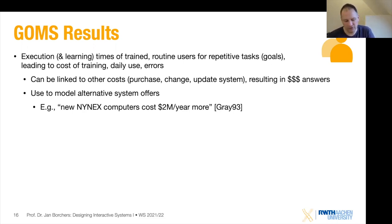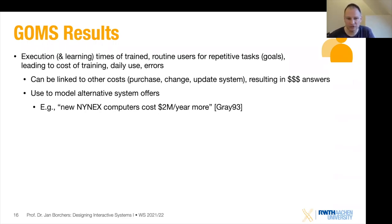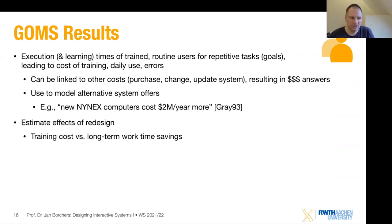Plus, if the exhibit uses non-standard input devices — like a baton to wave around in the air — that's not even a standard input device, so we wouldn't have the basic numbers for our elementary operators. GOMS doesn't apply for a variety of reasons: not experienced users, non-routine task, and possibly novel input devices with unknown operator timings.